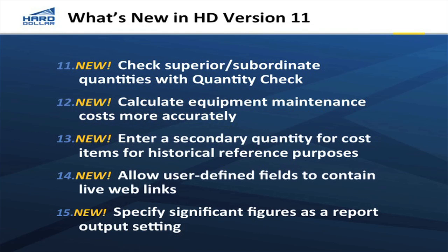Equipment maintenance costs are a big area of functionality in version 11. We have really taken equipment maintenance costs to a new level where you can drive those costs based on your productive equipment, associate those with a maintenance crew, and have those maintenance costs go up as your productive equipment costs go up and vice versa. Secondary quantities — we can track items in multiple quantities. We might want to measure a concrete item in cubic yards but also look at it in tons, and that will help us look at historical costs from different perspectives.